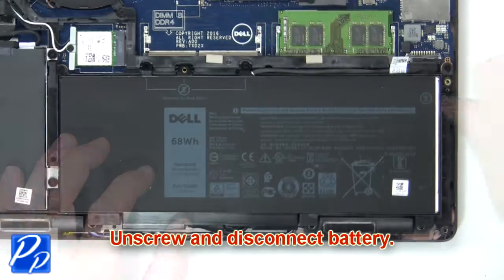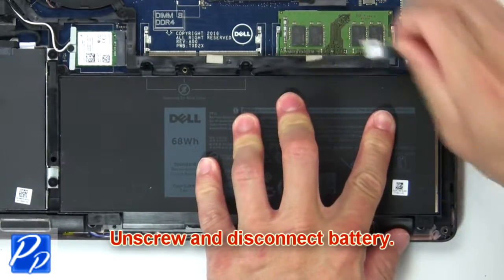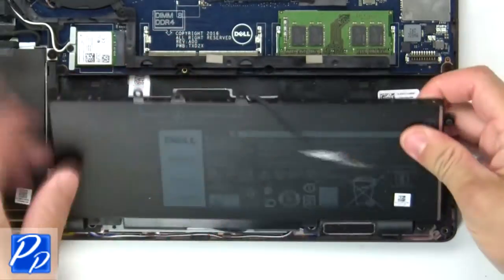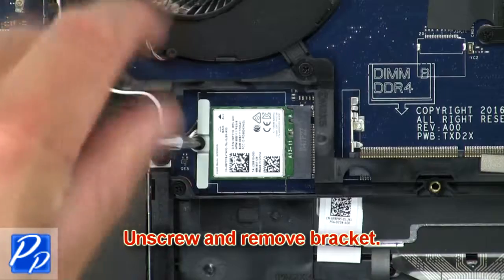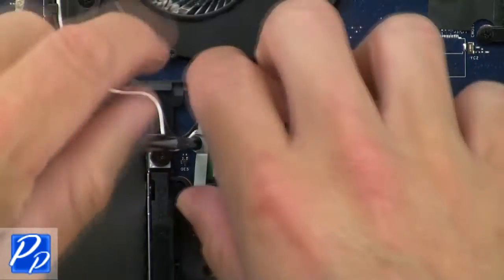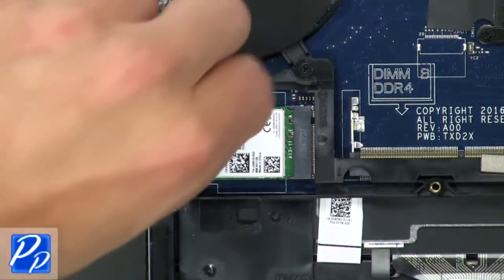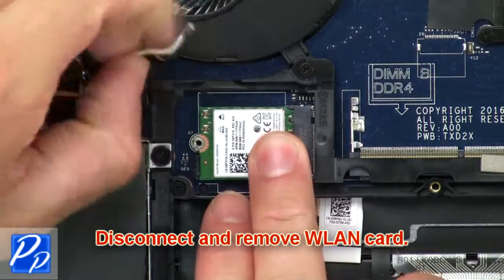Now unscrew and disconnect battery. Now unscrew and remove bracket. Then disconnect and remove wireless card.